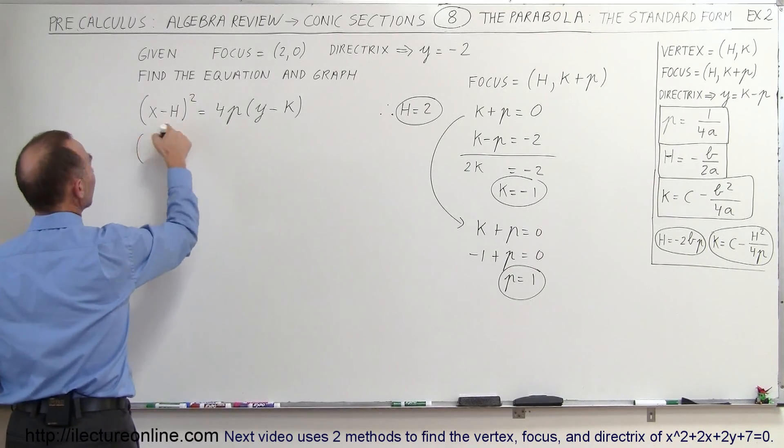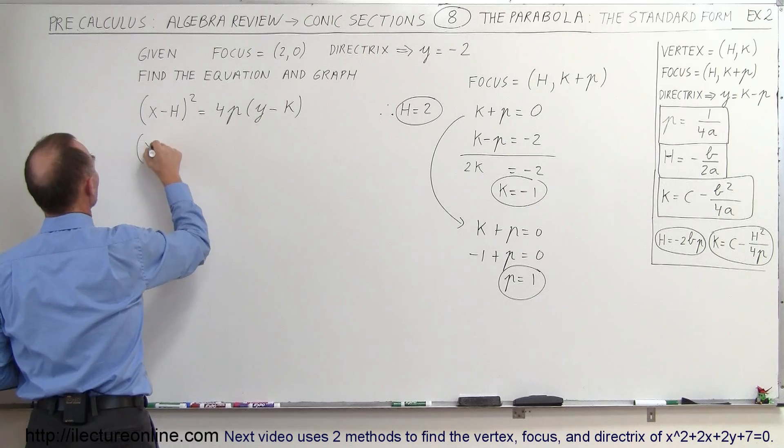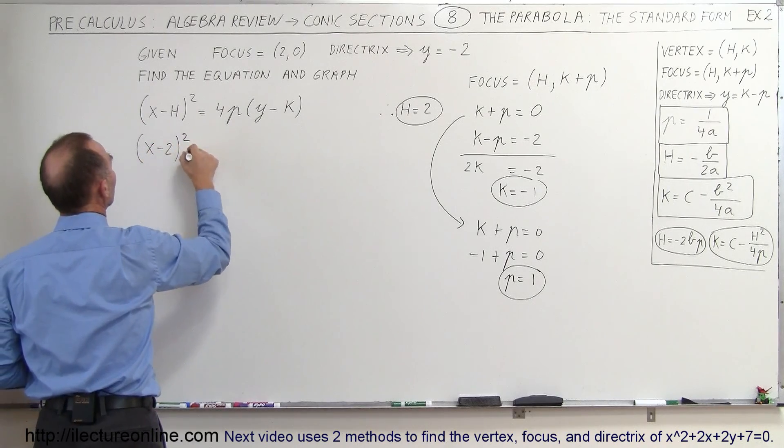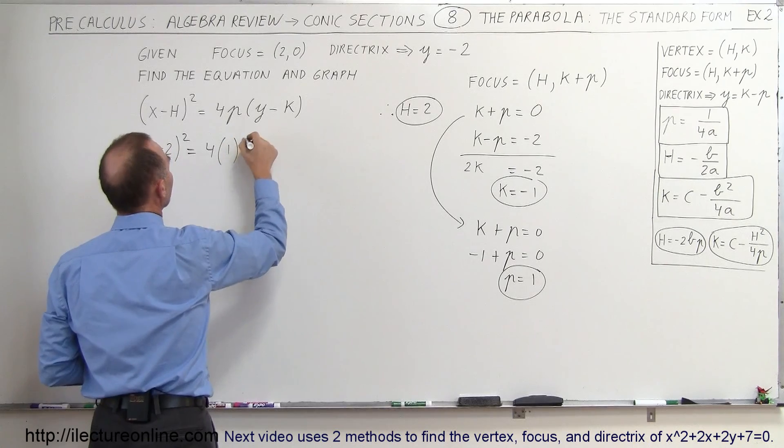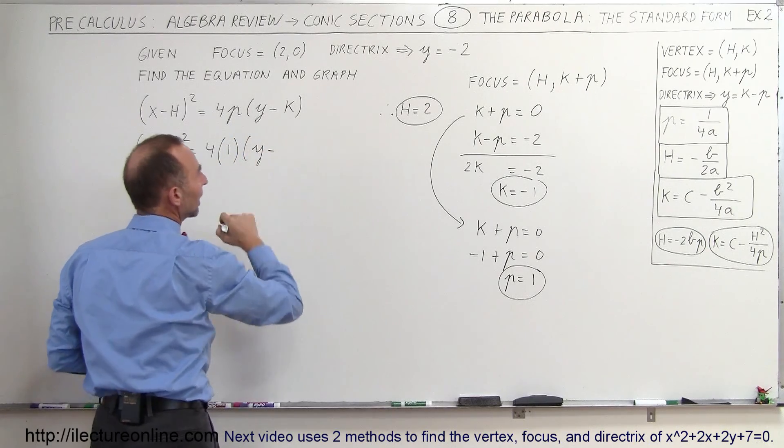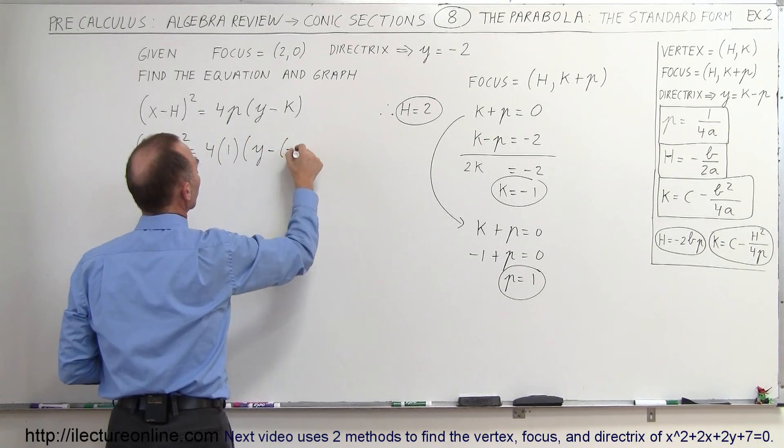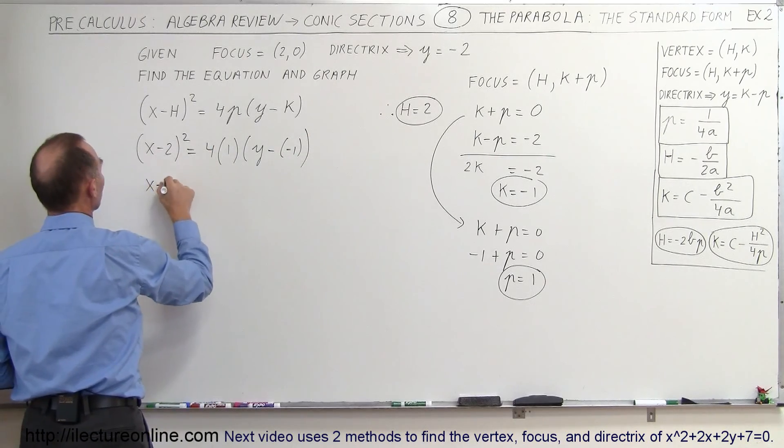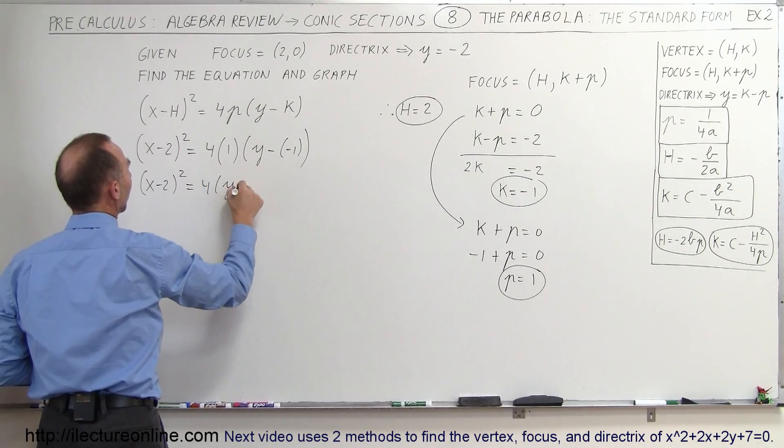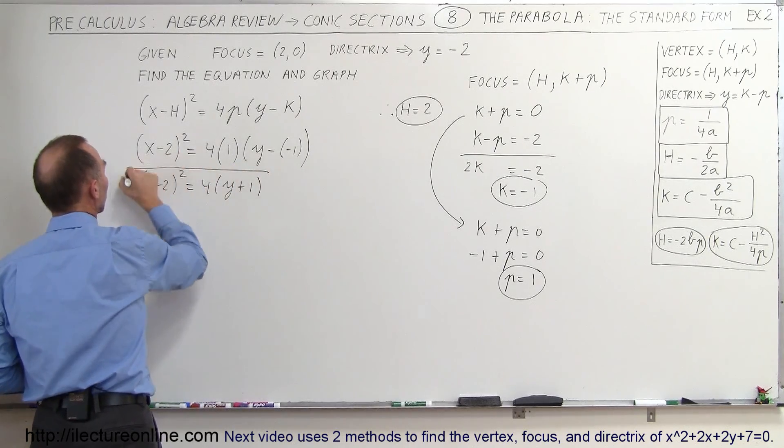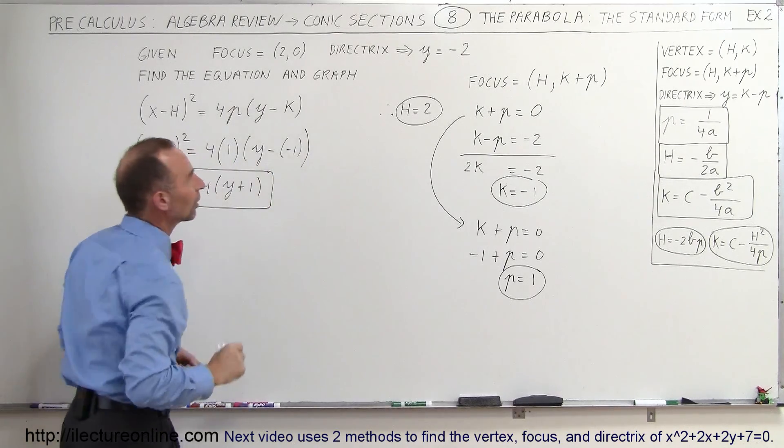So here we have (x - h)². h is equal to 2, so we have (x - 2)² = 4 times p. p is equal to 1 times (y - k), and k is equal to -1. So simplifying that we get (x - 2)² = 4(y + 1). And there's our standard form of the equation.